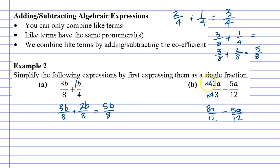Notice when I multiply the numbers, only the number changes — the letter A, or the pronumeral, stays the same. Now it's quite easy to solve because the 12s stay the same. If I have 8As and I take away 5As, I've now got 3As. You think you've solved it, and really you have, but you want to see if you can simplify it.